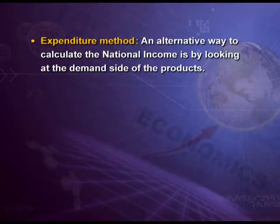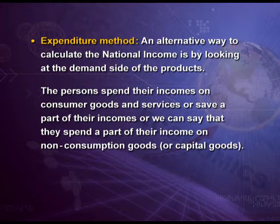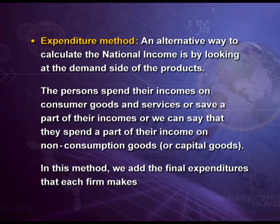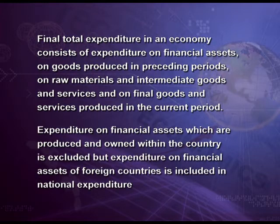The last method of measuring national income is the expenditure method. This is an alternative way to calculate national income by looking at the demand side. Persons spend their income on consumer goods and services or save a part, or spend a part on capital goods. In this method, we add the final expenditures that each firm makes. Total expenditure in an economy consists of expenditure on financial assets, on goods produced in preceding periods, on raw materials and intermediate goods and services, and on final goods and services produced in the current period.